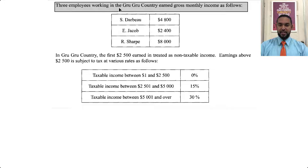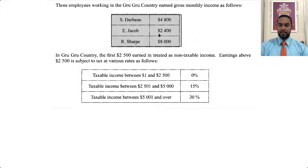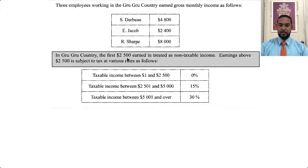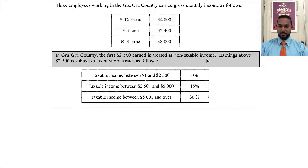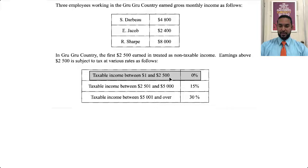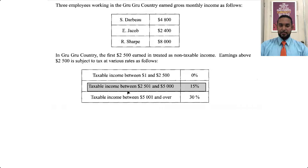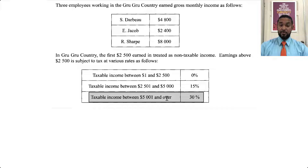So it says three employees working in the GrooGro country earned gross monthly income as follows: S. Darbo — $4,800; E. Jacob — $2,400; R. Sharpe — $8,000. In the GrooGro country, the first $2,500 earned is treated as non-taxable income. Earnings above $2,500 are subject to tax at various rates. Taxable income between $1 and $2,500 is 0% — that's the error I was talking about. Then taxable income between $2,501 and $5,000 is 15%, and taxable income of $5,001 and over is 30%.